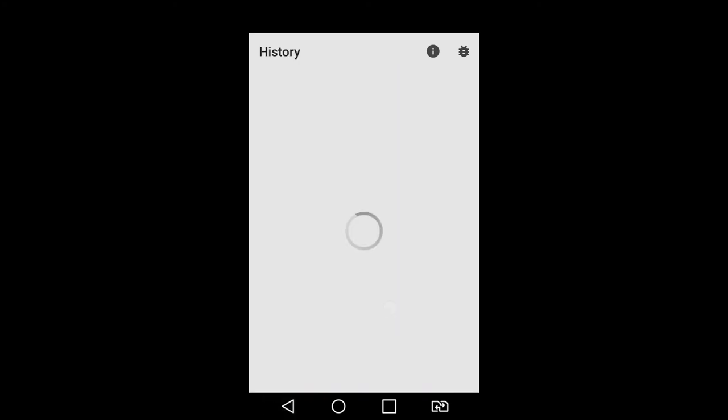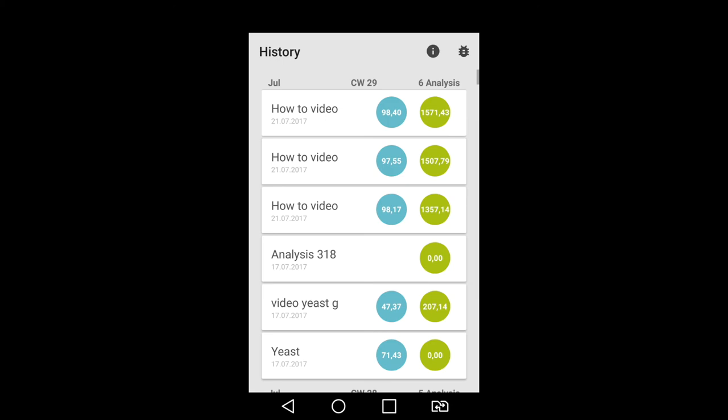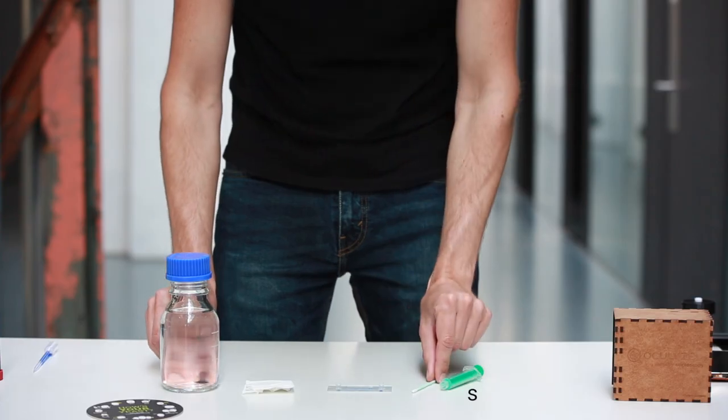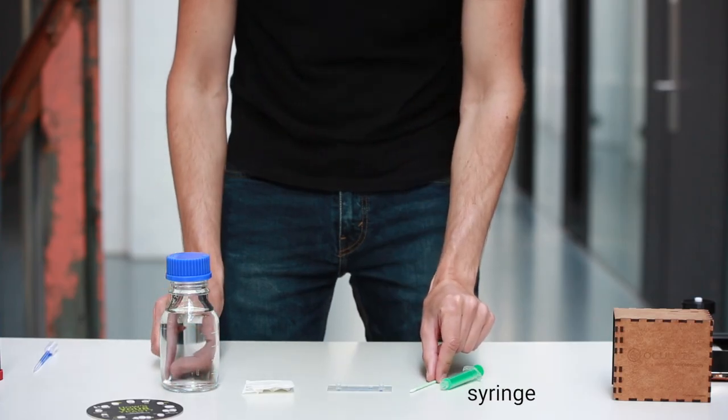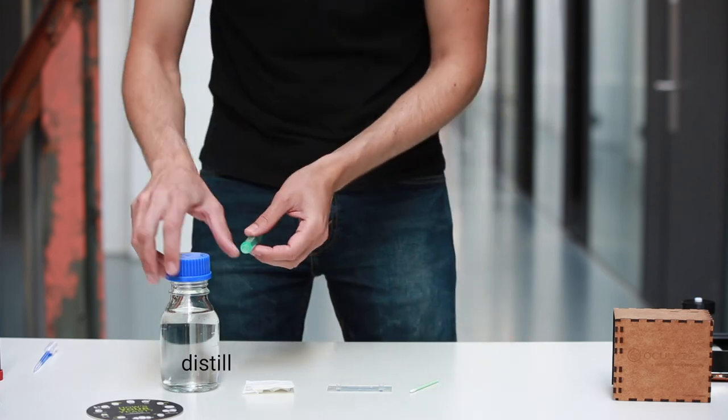View previous results in the history tab from the app home screen. In order to guarantee optimal analysis, the chamber must be cleaned and dried after each use. Step 1. Fill the syringe with distilled water.